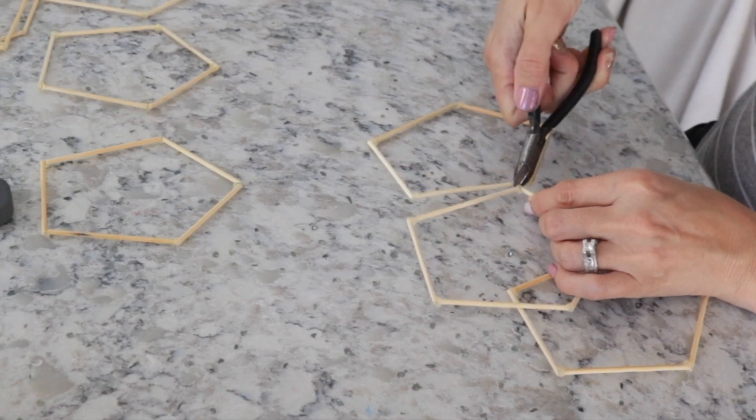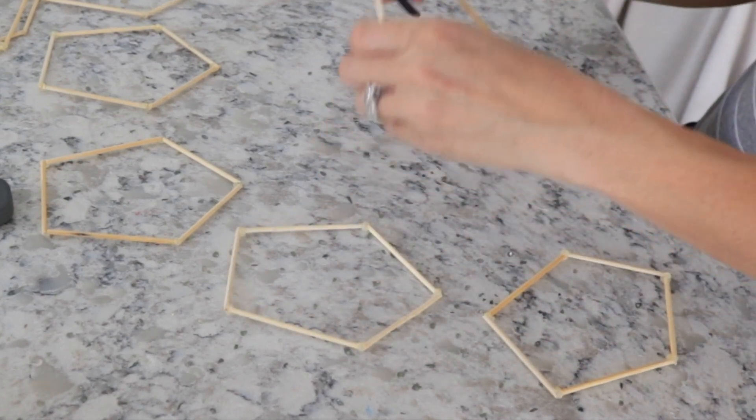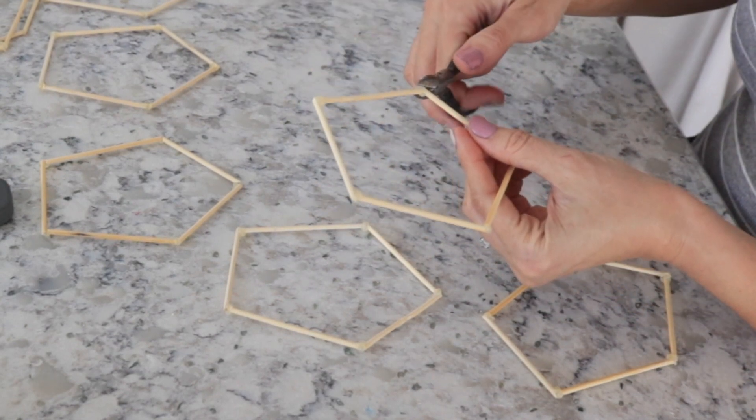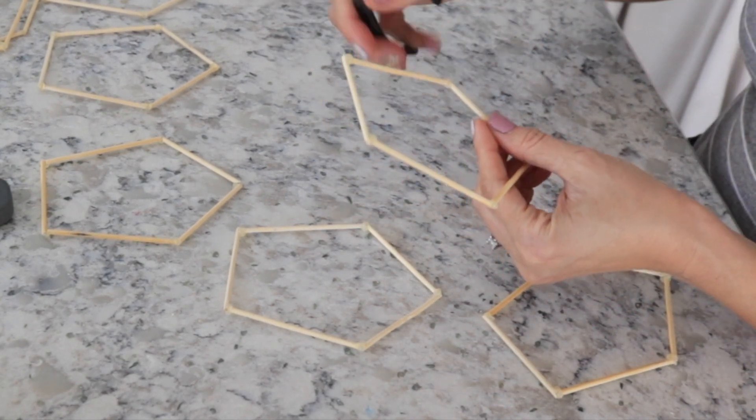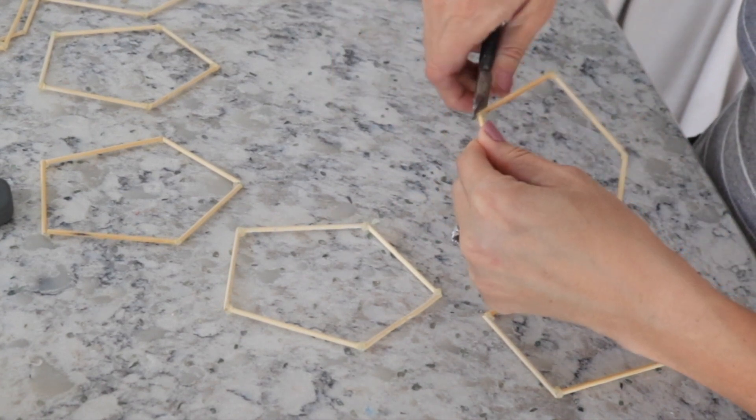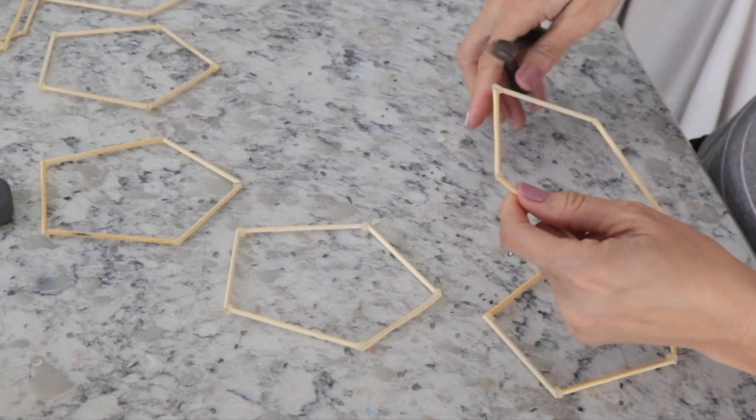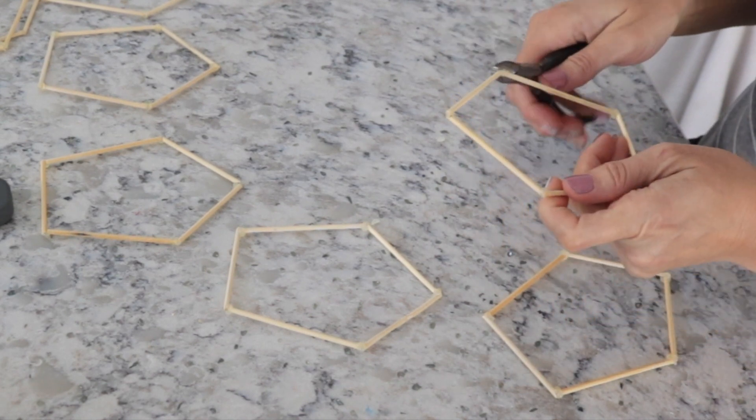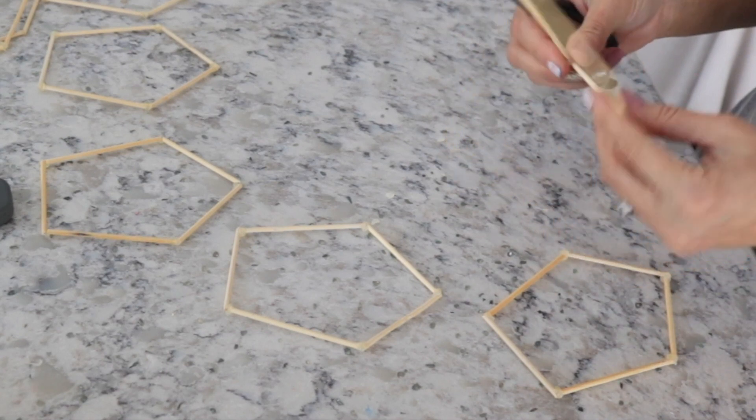Once I had all of my 12 pieces ready, I did notice that the glue was kind of sticking out in some spots. So I'm just taking my little cutters and I'm just kind of cutting off the glue pieces that were sticking out. We're going to spray paint it later so it won't be super noticeable, but I didn't want them to be like big globs on there. So just try to cut them out and make them as flush as possible.